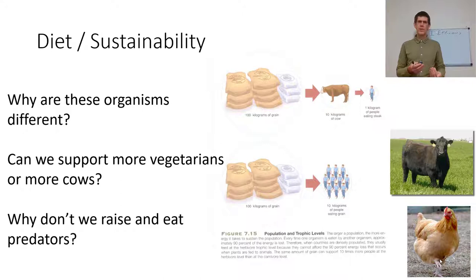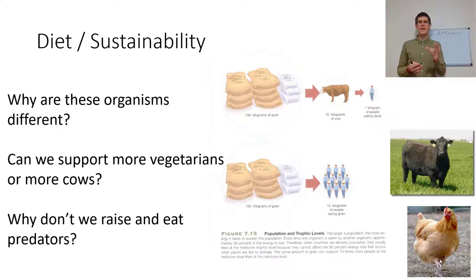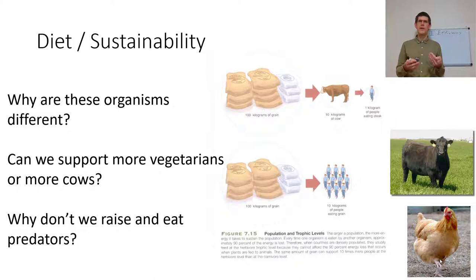We're also looking at a cow and a chicken — very different organisms. A chicken will produce more chicken meat than a cow produces beef per unit of grain, because these organisms have different production efficiencies. This also gets to the question of why we don't raise and eat predators: 100 kilograms of grain makes 10 kilograms of cow, which makes one kilogram of wolf, which would make 0.1 kilograms of human eating wolf. So it's more efficient for our species to feed on a lower trophic level.